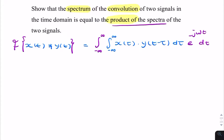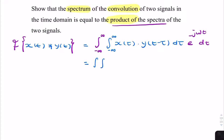The first thing we can do is rearrange the order of the integrations. We're allowed to interchange these. So we keep x(τ) and y(t minus τ) times e to the minus jωt dt dτ.